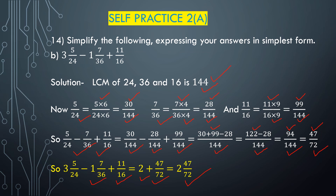Therefore, 3⁵/24 minus 1⁷/36 plus 11/16 is equal to 2⁴⁷/72, which is the final answer.